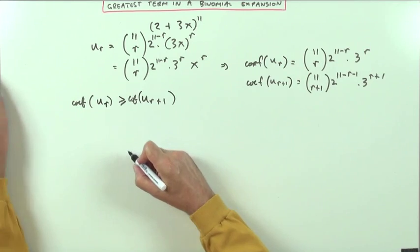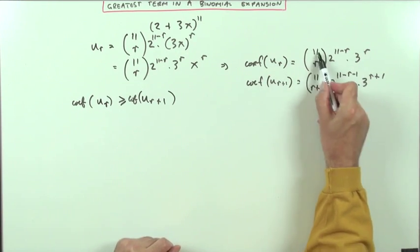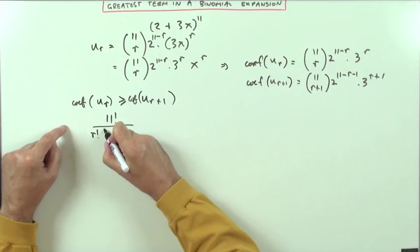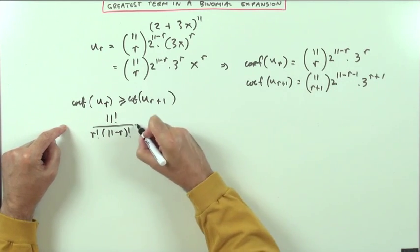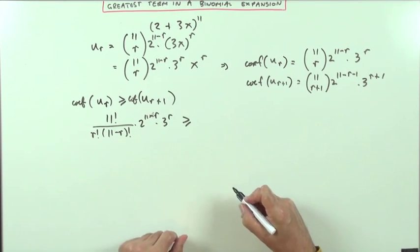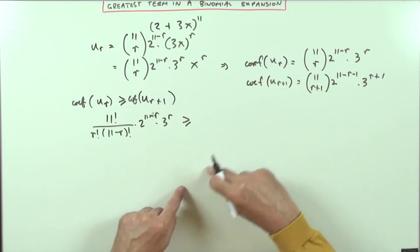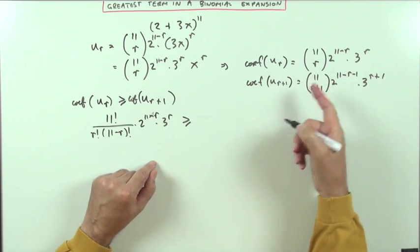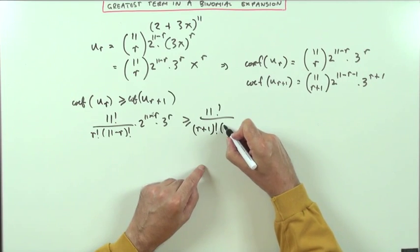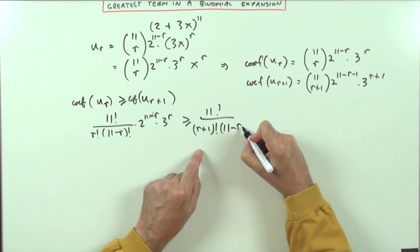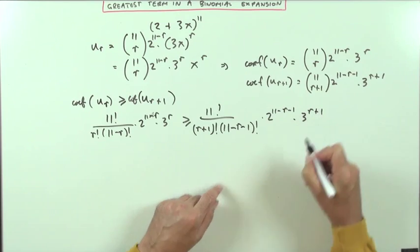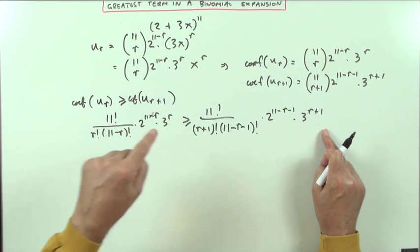Putting these parts in: the coefficient of u_r is 11! / (r! · (11-r)!) · 2^(11-r) · 3^r, and that has to be greater than or equal to 11! / ((r+1)! · (11-r-1)!) · 2^(11-r-1) · 3^(r+1). We include the 'equal to' because sometimes two terms in the middle may be the same before they start falling again. We need to solve that inequality for r.